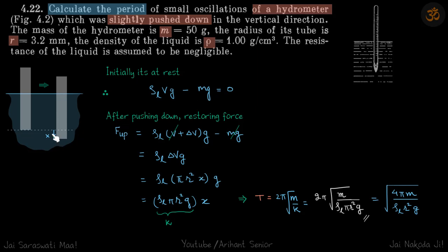And after pushing down by a slight amount x, the mg is going to be the same, but the buoyant force is going to increase, and that's going to increase by ρ_l Δv into g. So the overall equation will be ρ_l into volume submerged, which now is V plus Δv, into g minus mg.